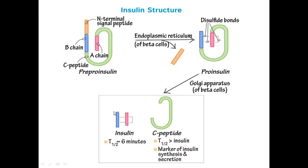After formation, insulin has two chains: A and B chain. The half-life of this produced insulin is about six minutes. We also have C peptide, which is divided from the insulin molecule. C peptide half-life is much longer than insulin half-life, and that is why C peptide can be used as a marker of insulin synthesis or insulin secretion. Because insulin is very quickly destroyed after action by liver insulinase, but C peptide is not destroyed. That is why we use C peptide to check the amount of insulin.